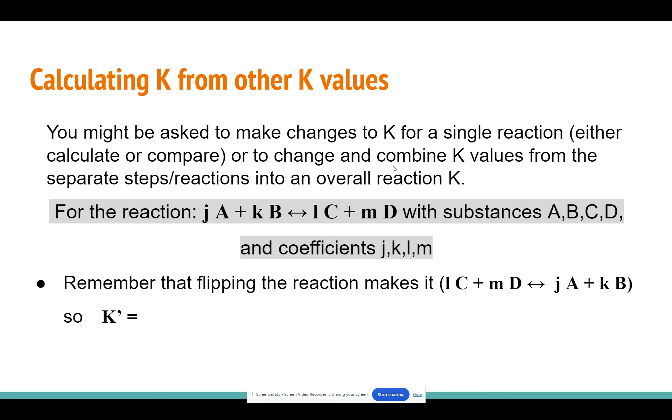If we have this general equation where we have substances A, B, C, D with coefficients j, k, l, m, normally we do products over reactants. So we'd have C and D raised to l and m powers over A and B to the j, k powers. But if we flip that reaction, so our reactants become products and products become reactants, our K value is going to be inverted. We're going to do 1 over K because our products and reactants have shifted places.